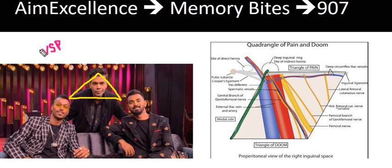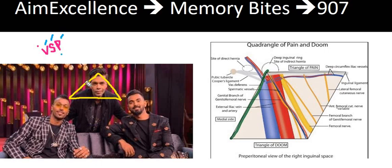We first know the boundaries: medially it is going to be the vas deferens, laterally it is going to be the spermatic vessels, and inferiorly it is going to be the peritoneal fold — that comprises the triangle of doom.